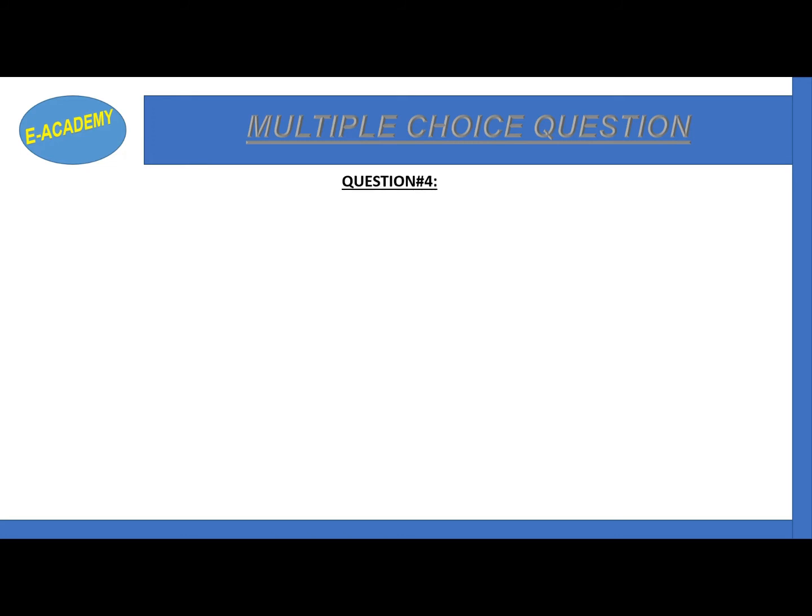Now question number 4. sp3 hybridization is not important in describing the bonding in NH4+, CCl4, H2O, or AgCl. The correct option is D, AgCl.